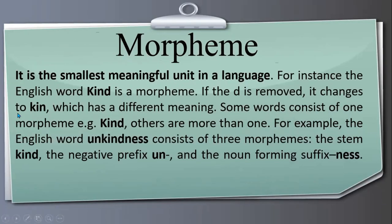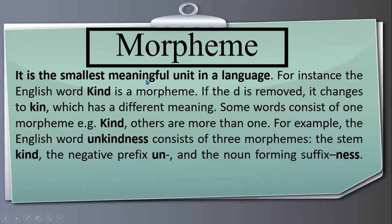Now we are going to talk about morpheme. A morpheme is the smallest meaningful unit in a language. For example, the English word 'kind' is a morpheme. If the letter 'd' is removed, it changes to 'kin', which has a different meaning. So 'kin' and 'kind' are actually two different morphemes.